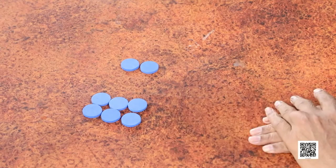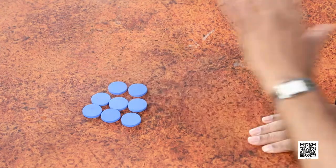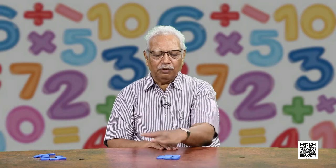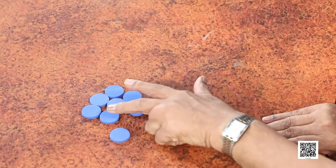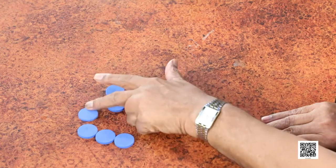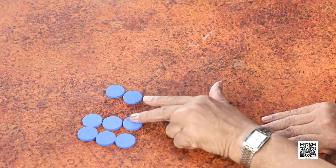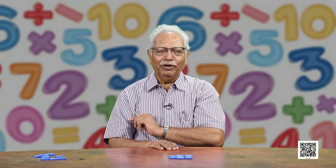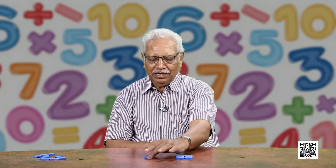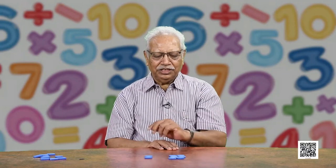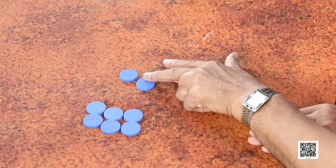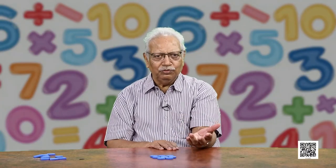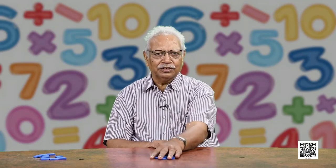So these are 6. And if we add 2 to them, now how many do they become? One way is that I count them all together: 1, 2, 3, 4, 5, 6, 7 and 8. Another way could be that I know these are 6, so I count forward — 7 and 8. This way it becomes easier. So choose whichever way you want. You can add these numbers: 6 and 2.